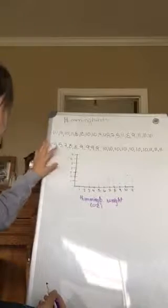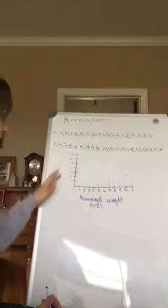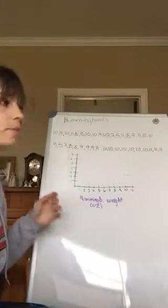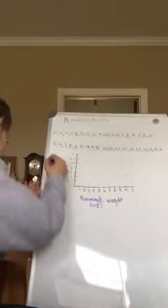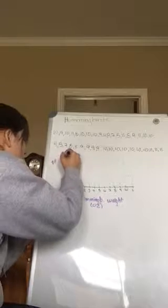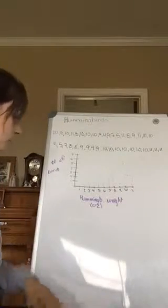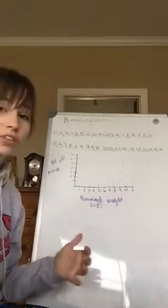And then I'm going to have my y-axis be the number of hummingbirds in each weight. So it's just going to say number of birds. Now I'm going to create a histogram.